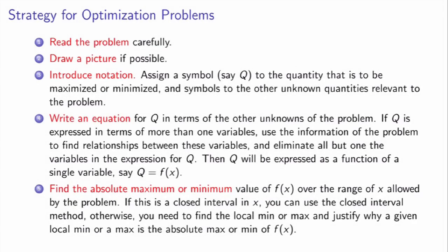Let me end by giving you a strategy for solving optimization problems in general. Step 1: read the problem carefully — spend the time necessary to really understand it. Step 2: draw a picture if possible; if it is possible, it will be helpful. Step 3: introduce notation — assign a symbol to the quantity you want to optimize and also symbols to other quantities relevant to the problem. In our case, we called the cost function C and wrote it in terms of r and h.